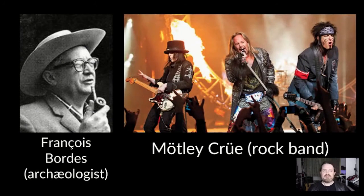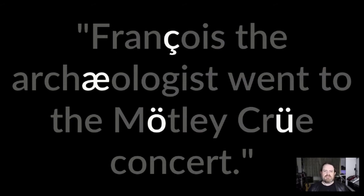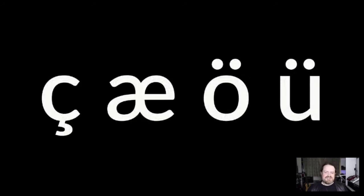Let me introduce some friends. This is François Borda, an archaeologist, and this is the rock band Mötley Crüe. François the archaeologist went to the Mötley Crüe concert. This sentence is in English but contains characters not part of the English alphabet: a C with a cedilla, an AE ligature, and an O and U with umlauts — the heavy metal umlaut, which American and British rock bands use because they think it looks cool. The first time Mötley Crüe played in Germany, in German that Ö is a different letter of the alphabet, so the crowd was all shouting 'Mörkley Crüe!' and the band had no idea why they were getting their name wrong.